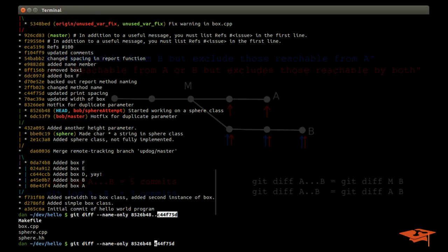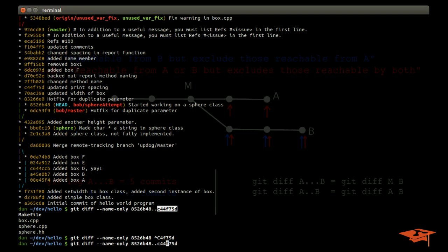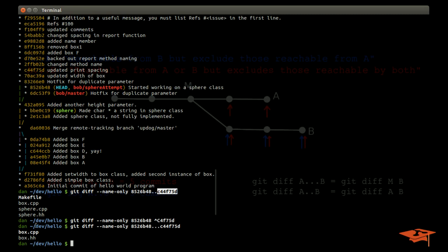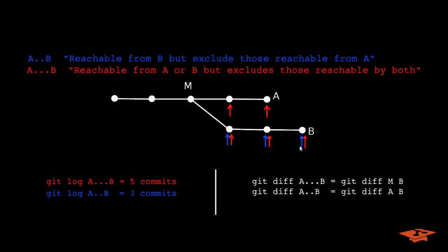You might say, well why would I ever do that? Because that's the same thing as this. And that's a great point, you might never do that. But what's cool is the triple dot notation. So we add one more dot, you notice we have a different set of diffs. And it makes sense, right? Because in the two dot example we're saying give me the difference between this commit and this commit.